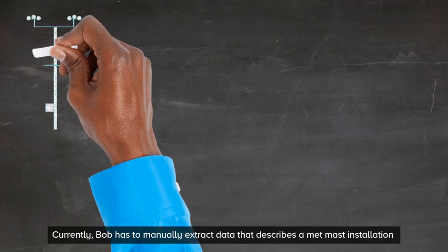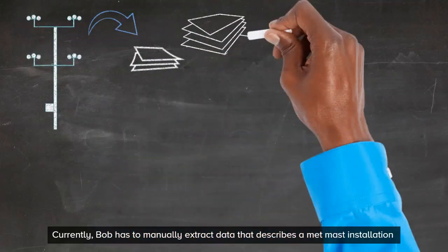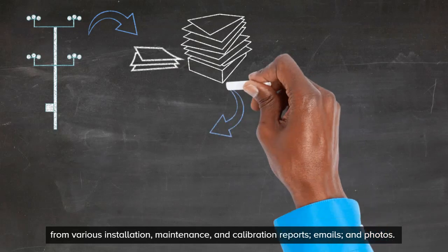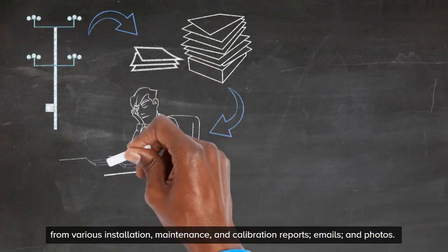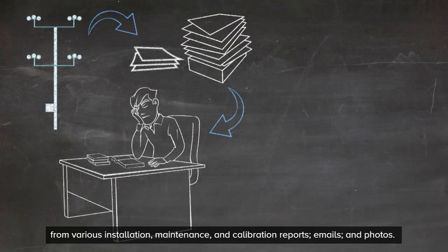Currently, Bob has to manually extract data that describes a MetMast installation from various installation, maintenance, and calibration reports, emails, and photos.